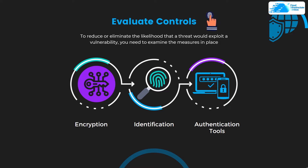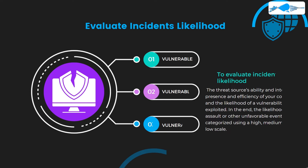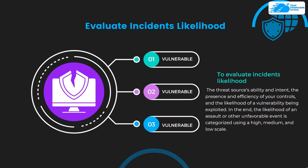At number five we have evaluating incident likelihood. To evaluate incident likelihood you need to consider the type of vulnerability, the threat source's ability and intent, the presence and efficiency of your controls, and the likelihood of a vulnerability being exploited. The likelihood of an assault or other unfavorable event is then categorized using a high, medium, and low scale, and based on that you prioritize them.